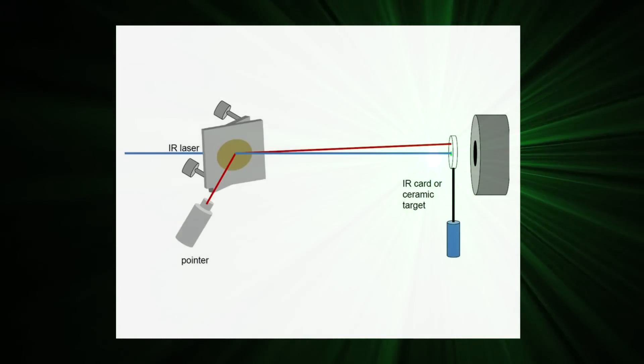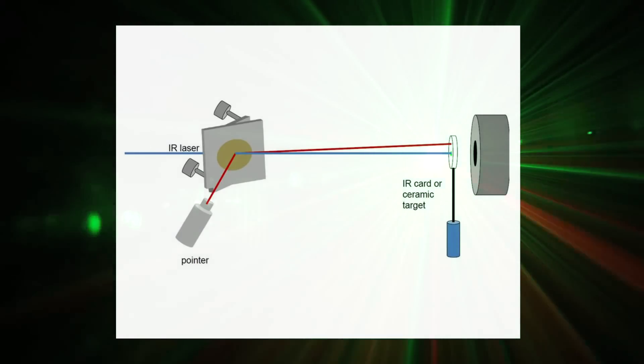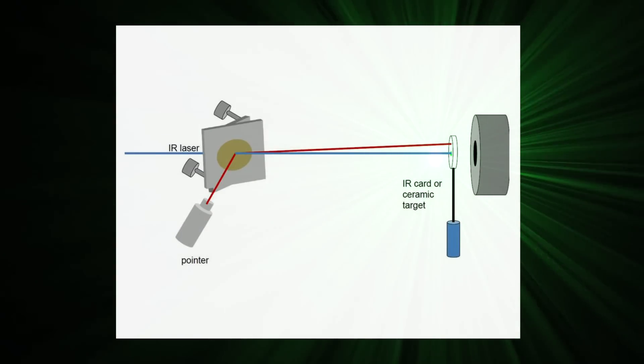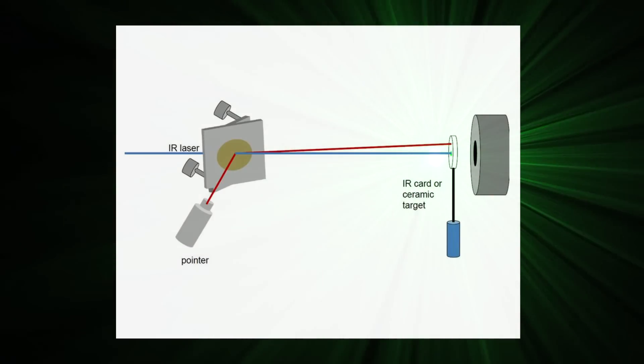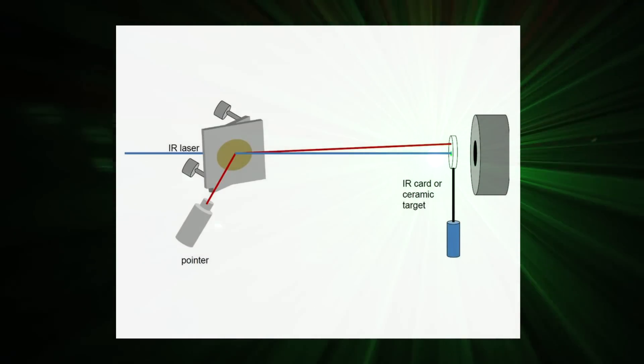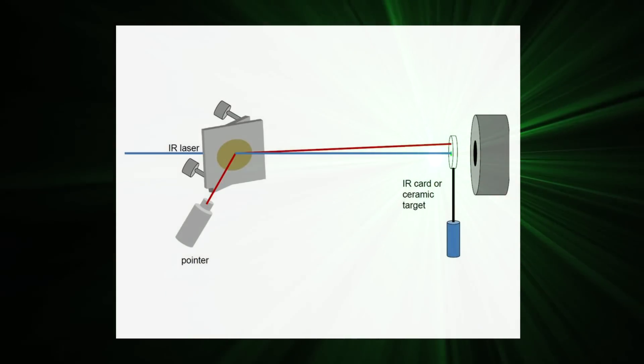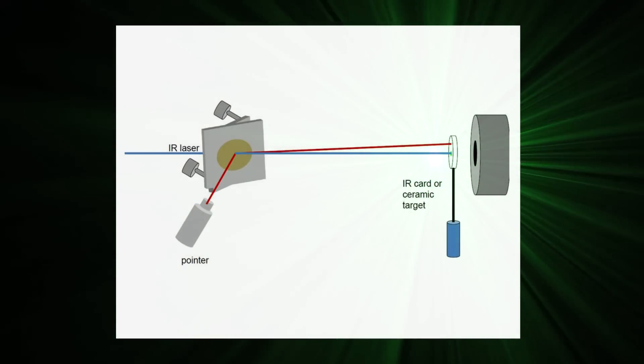Step 2: Now that the two beams are at least approximately aligned, we move the IR card farther away, and place it near where the target in the live application is actually going to be. We now look at the two spots, the IR and the visible, on the IR card.